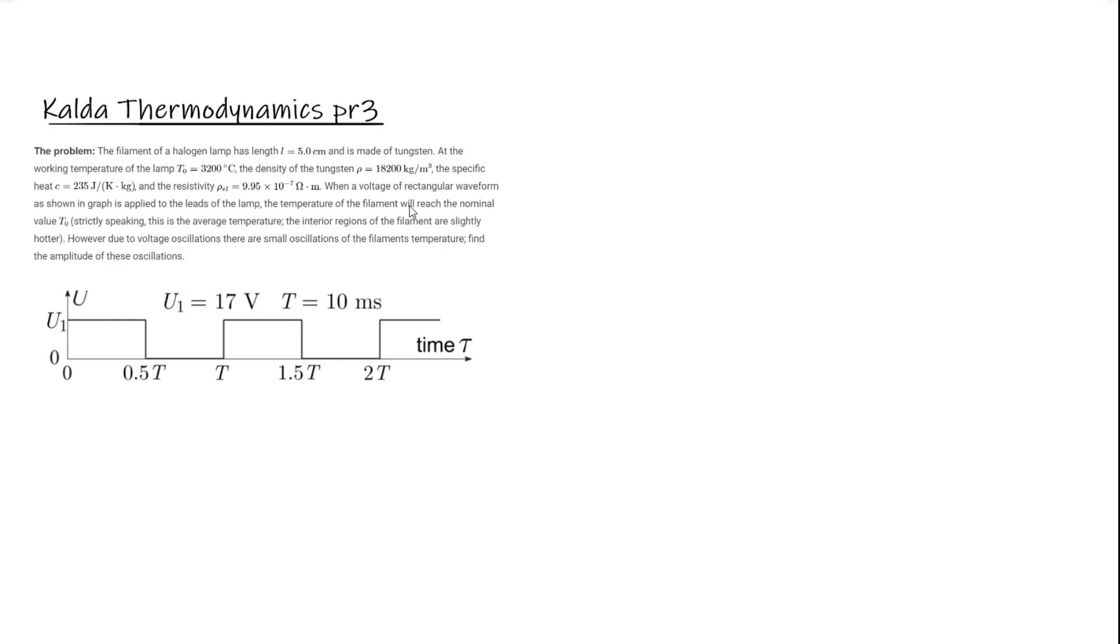When a voltage of rectangular waveform as shown in the graph is applied to the lead of the lamp, the temperature of the filament will reach the nominal temperature t sub 0. Strictly speaking, this is the average temperature. Due to voltage oscillations, there are small oscillations of the filament's temperature. Find the amplitude of these oscillations.